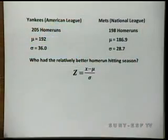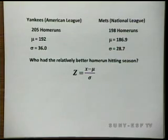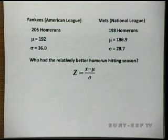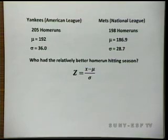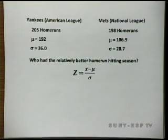So, let's look at our data. The Yankees play for the American League. They hit 205 home runs. The American League had a mean of 192 home runs for this season, with a standard deviation of 36 home runs. The Mets play for the National League. They hit 198 home runs this season. The mean for the National League is 186.9 home runs, with a standard deviation of 28.7 home runs.